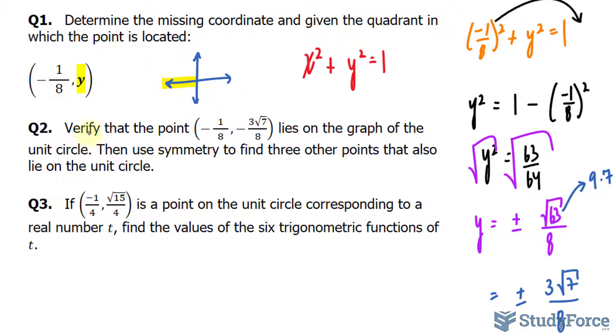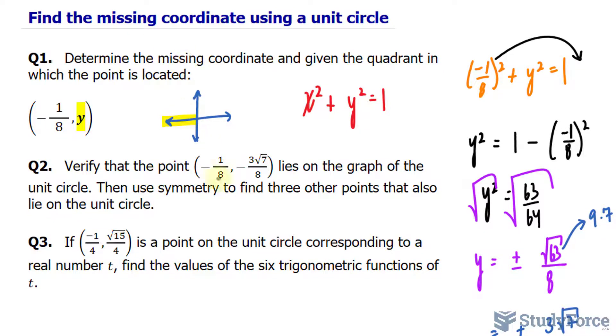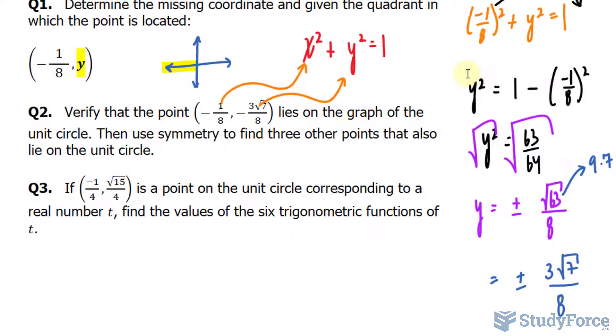In question number 2, verify that the point, given these coordinates, lies on the graph of the unit circle. Then use symmetry to find three other points that also lie on the unit circle. OK, first we verify by substituting this coordinate into x and that coordinate into y. So rather than doing the math, I know that it will equal to 1.